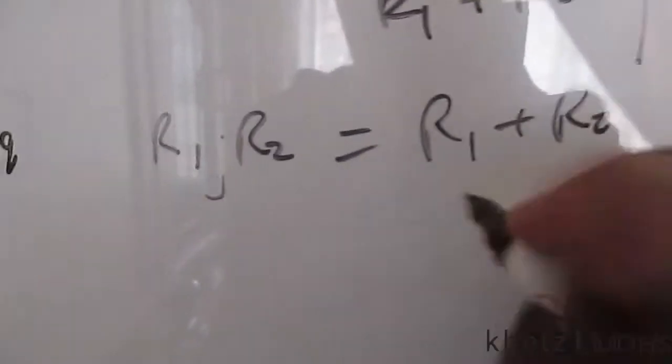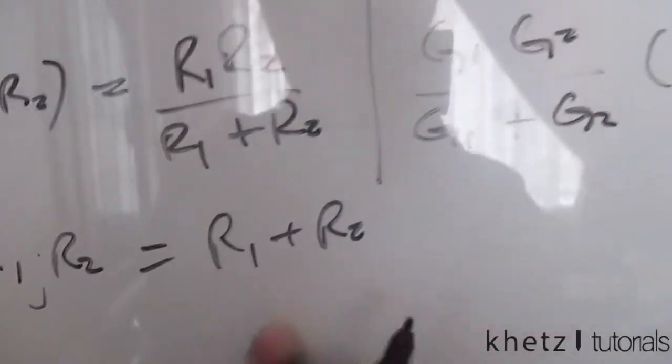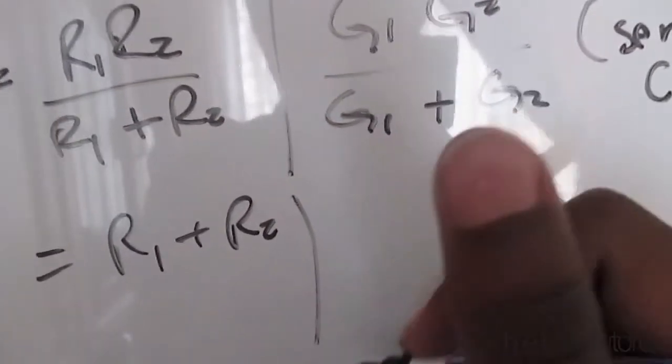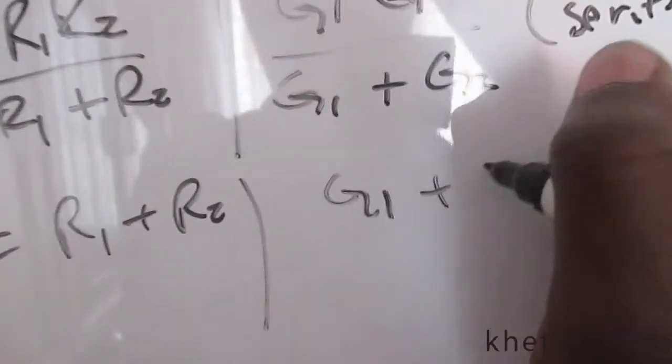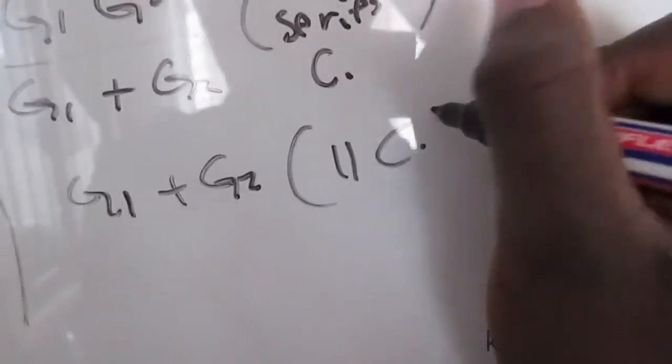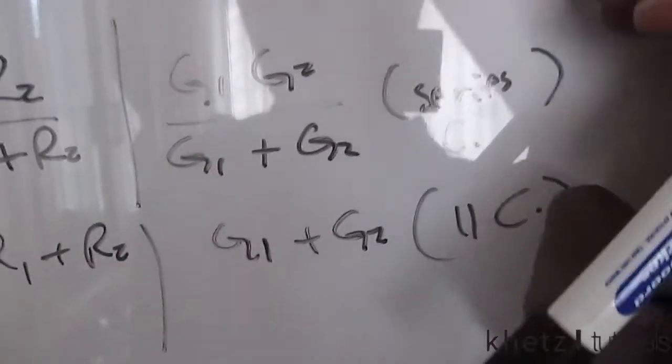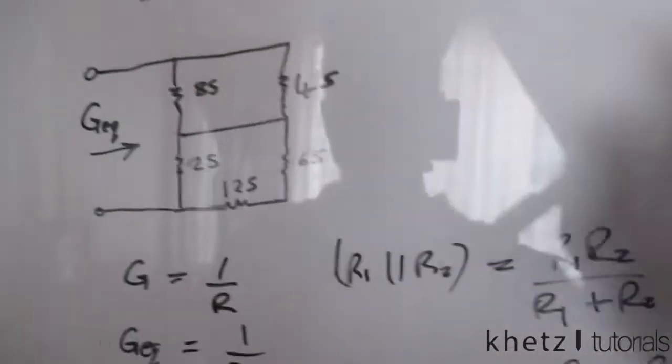And in this case, we have series resistors, which we simply add. But now in the case of conductances, we apply this G1 plus G2, when we have parallel conductances. So keeping this in mind, let's go ahead and solve the problem which we have here.